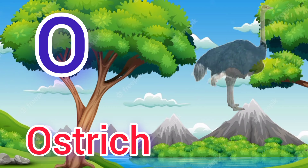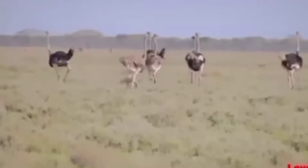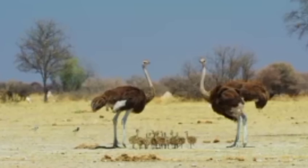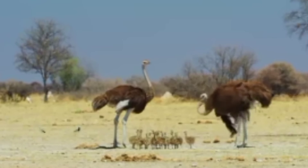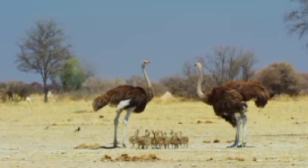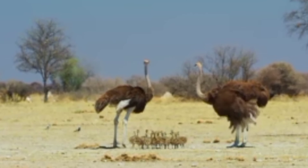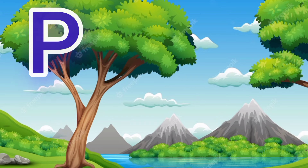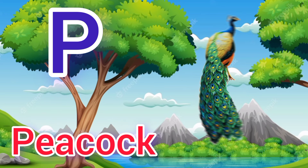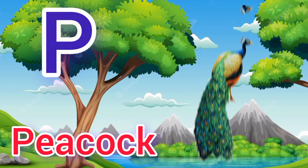O. O for ostrich, ostrich means sutur murgh. P. P for peacock, peacock means mor.